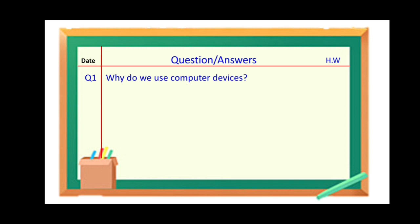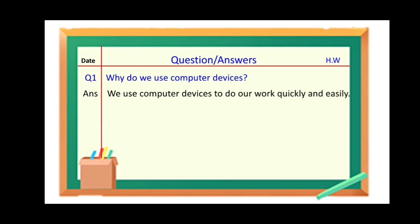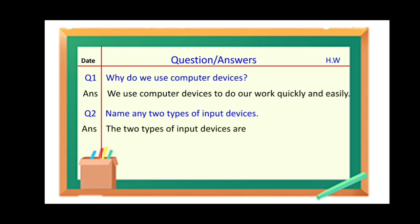Question number one: Why do we use computer devices? Write it in very neat and clean writing following the four lines. Answer: We use computer devices to do our work quickly and easily. Question number two: Name any two types of input devices. Answer: The two types of input devices are keyboard and mouse.